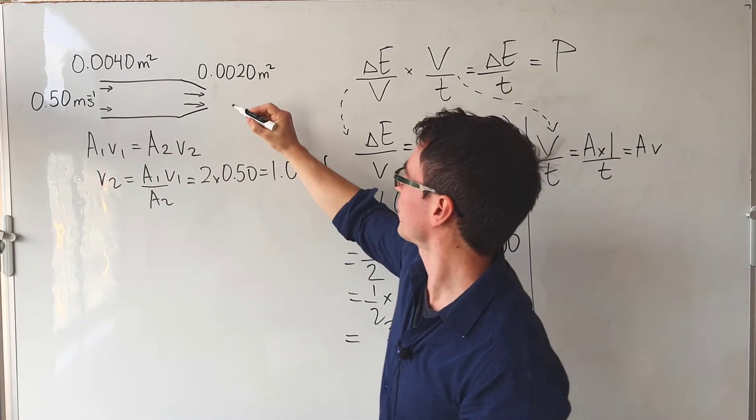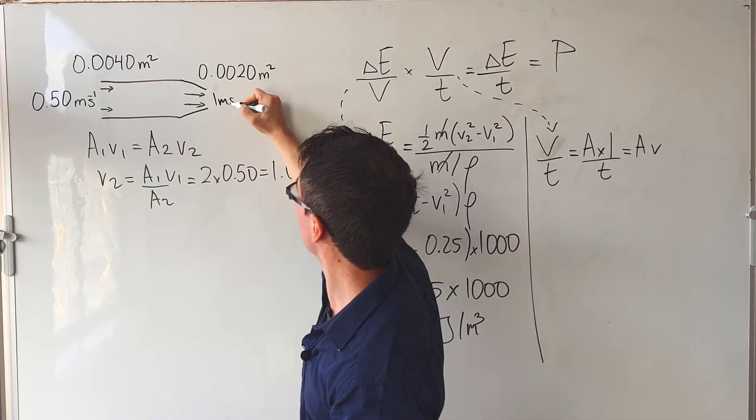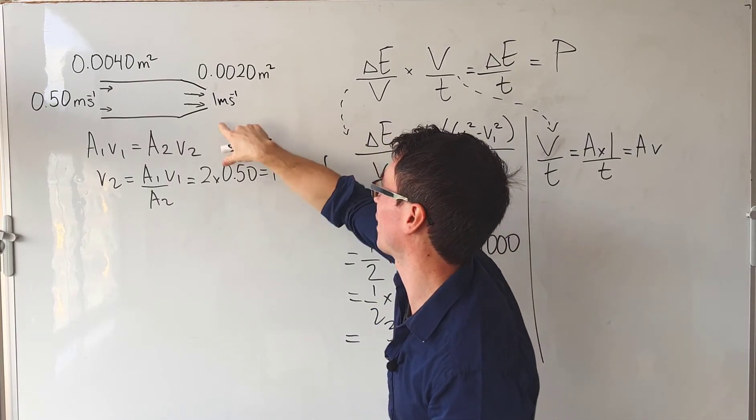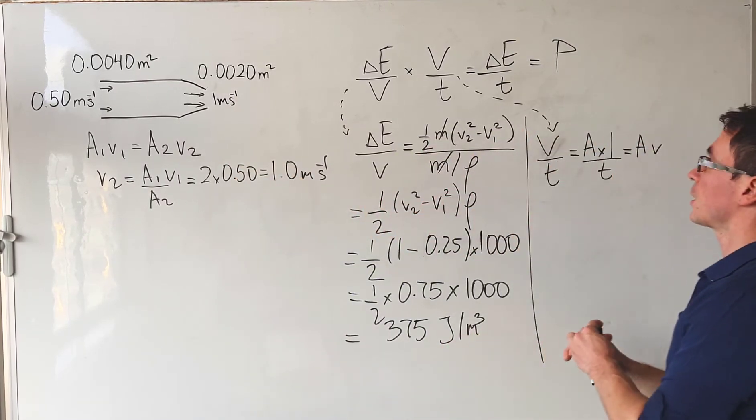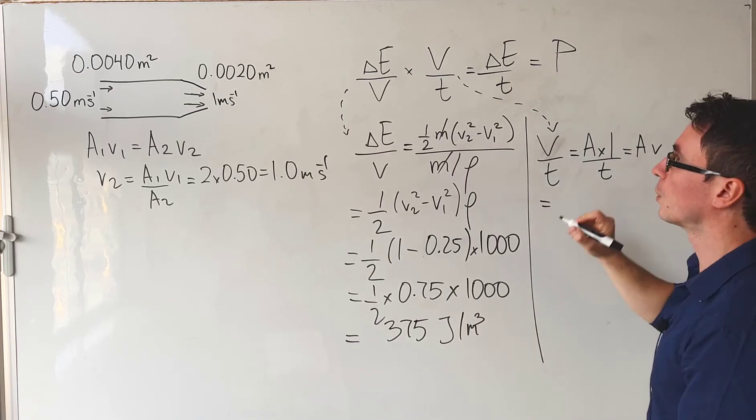Since we calculated this to be 1 meter per second, I'm just going to multiply those two numbers because they're nice and easy to calculate, which will just give us 0.002 meters cubed per second.